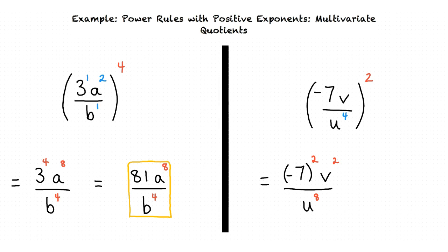-7 squared equals 49, so our final answer is 49v² over u⁸.